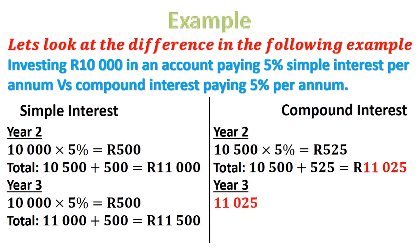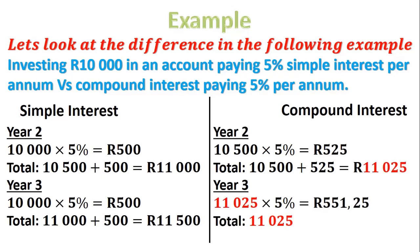For year three with compound interest, we take our 11,025 Rand, multiply that by 5%, and we get 551 Rand and 25 cents. Therefore, our total is 11,025 plus 551.25, giving us a total of 11,576 Rand and 25 cents.